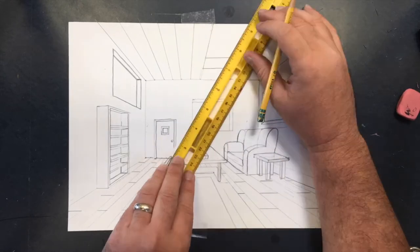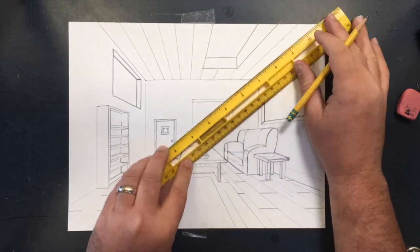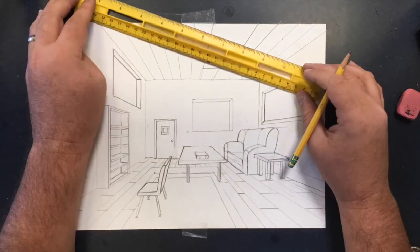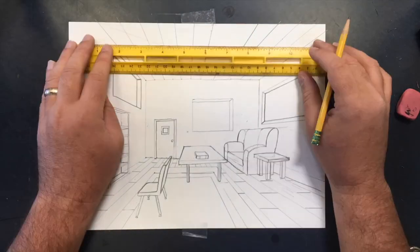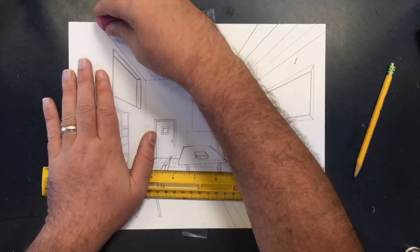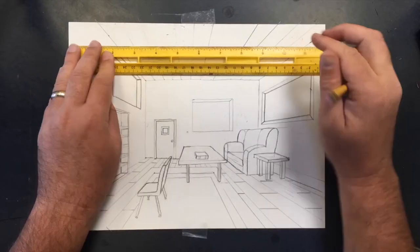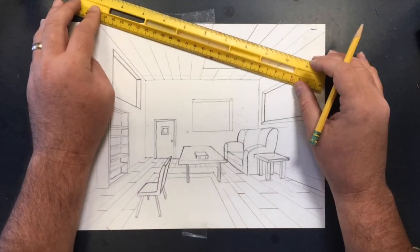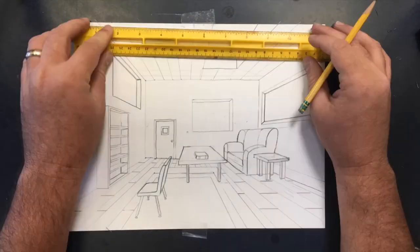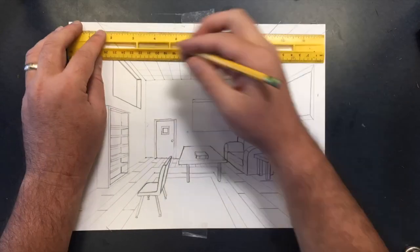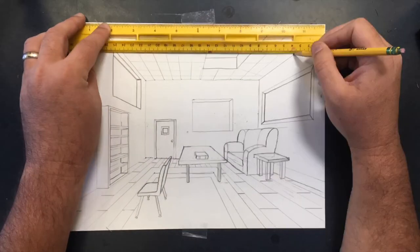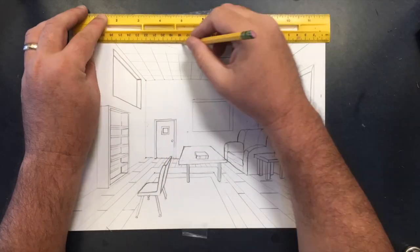To make the tiles look 3D, you use the vanishing point to create the lines that are coming towards you, but then you make a diagonal line that connects the back right corner of the ceiling to the front left corner, and then every time that diagonal line touches one of the guidelines, draw a horizontal line, and that'll make a tiled surface that goes back in space.